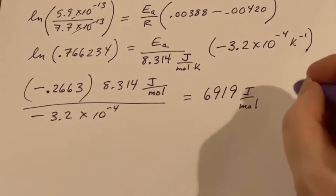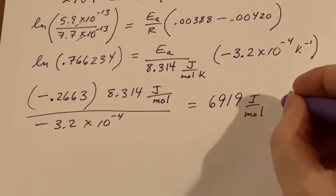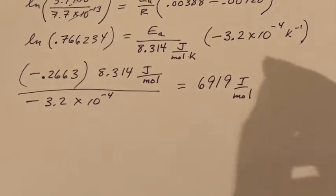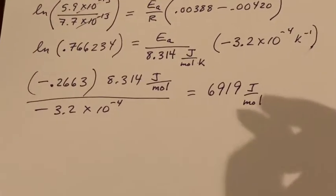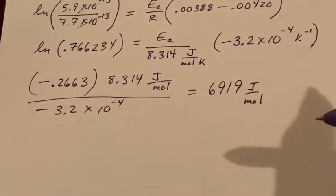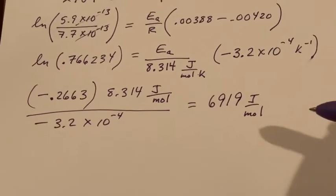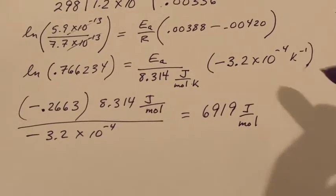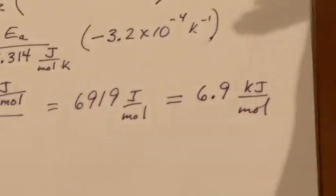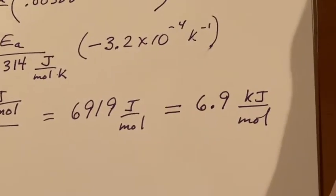I'm trying to get Ea by itself, so I'll use this to multiply - joules just per mole now and cancel the kelvin - and then I will be dividing by this one. I'm going to get rid of that negative sign; the negative signs are going to cancel. Run this through my calculator and I end up with 6919 joules per mole.